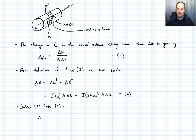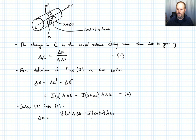The change in concentration delta C equals J evaluated at x times A times delta t, minus J evaluated at x plus delta x times A times delta t, all divided by A times delta x from Equation 1. Let's call that Equation 3.